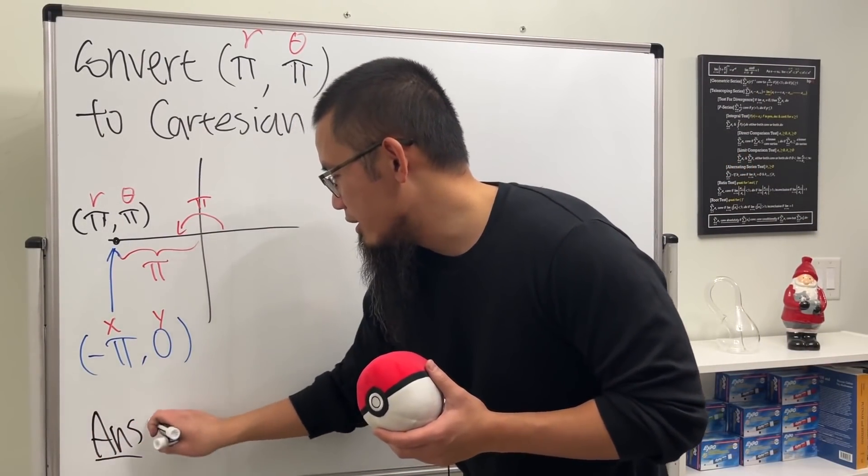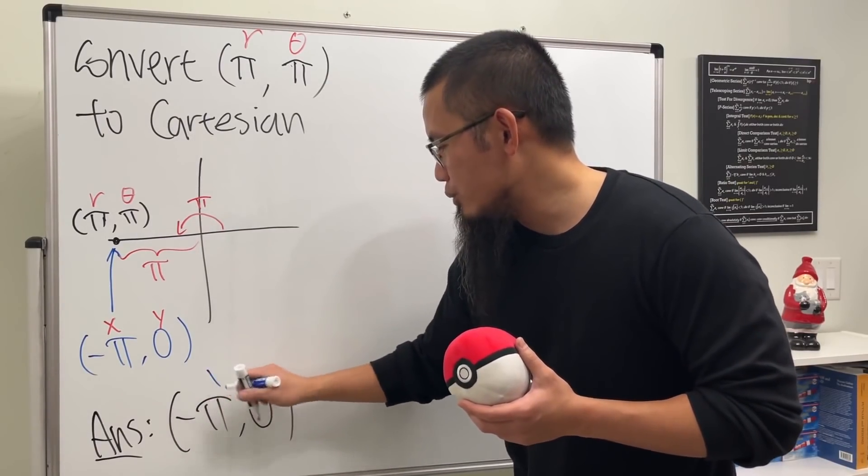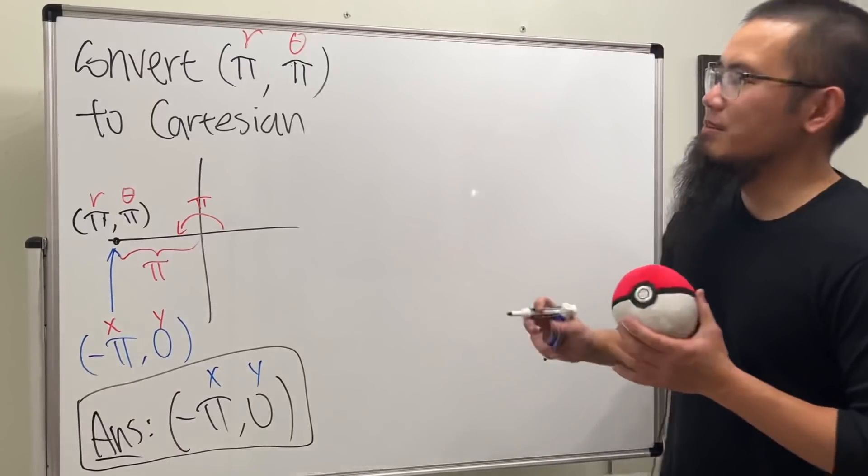And that's it! So the answer for this is just (-π, 0). Let me just put that down. The deal is that we just have one answer: (-π, 0). You don't really need to use the formula. You could, but once you drew the picture, it's much more clear.